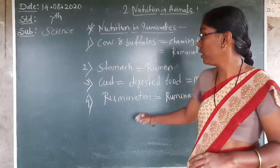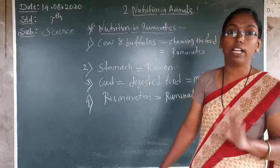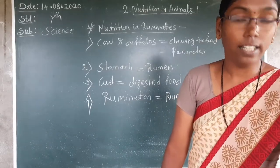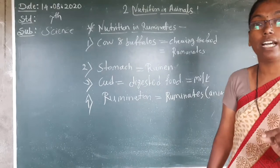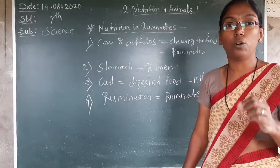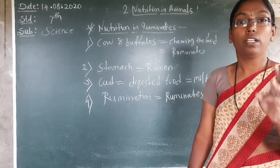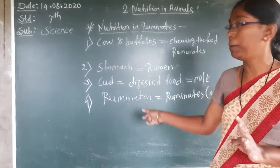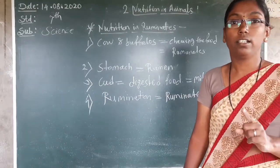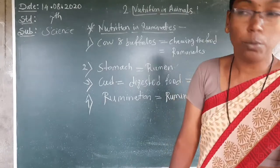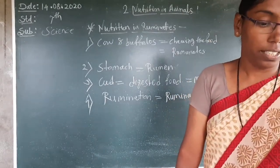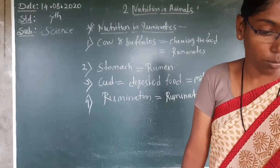In the next lecture, we will continue this and I will explain it again. So continue reading and write down the points. Count how many points you can get. Definitions are very important; examples are very important. Read nutrition in animals and rumination properly at home. Thank you all.